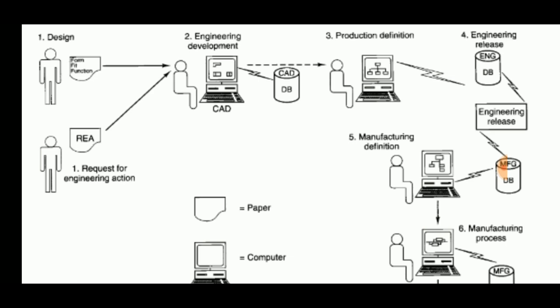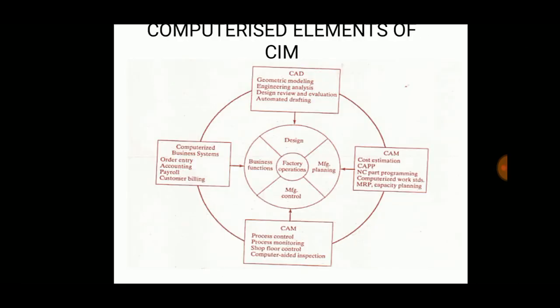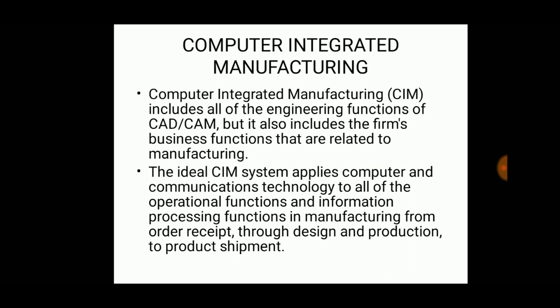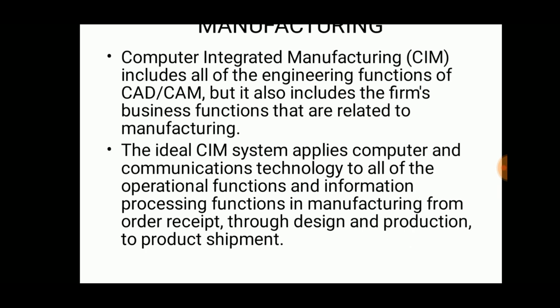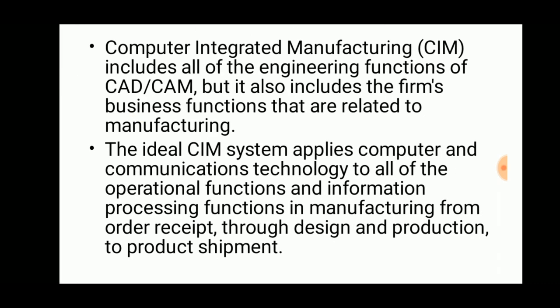Hello viewers, welcome to Engineering Study Materials. Today we are going to discuss computer integrated manufacturing, simply called CIM. CIM is a system that uses automated machines to perform engineering functions. The CIM system applies computer and communication technology, connecting machines together and integrating them so that manufacturing operations can be controlled through the computer itself.